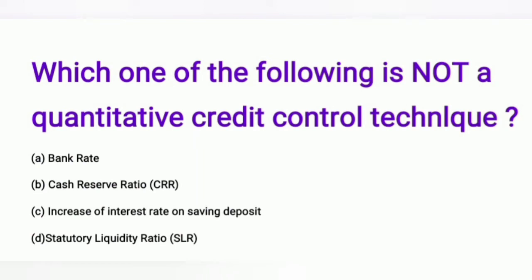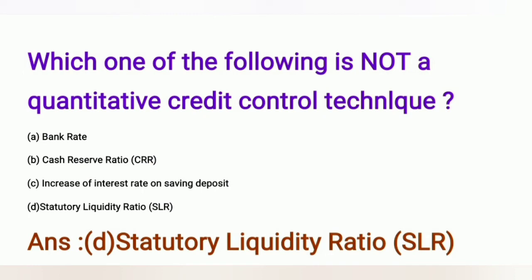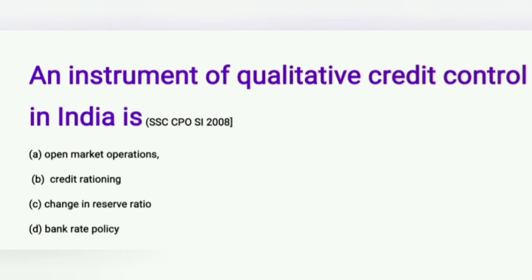Question: Which one of the following is NOT a quantitative credit control technique? A) bank rate, B) cash reserve ratio, C) increase of interest rate on saving deposit, D) statutory liquidity ratio. The answer is statutory liquidity ratio. An instrument of qualitative credit control in India is — A) open market operation, B) credit rationing, C) change in reserve ratio, D) bank rate policy.